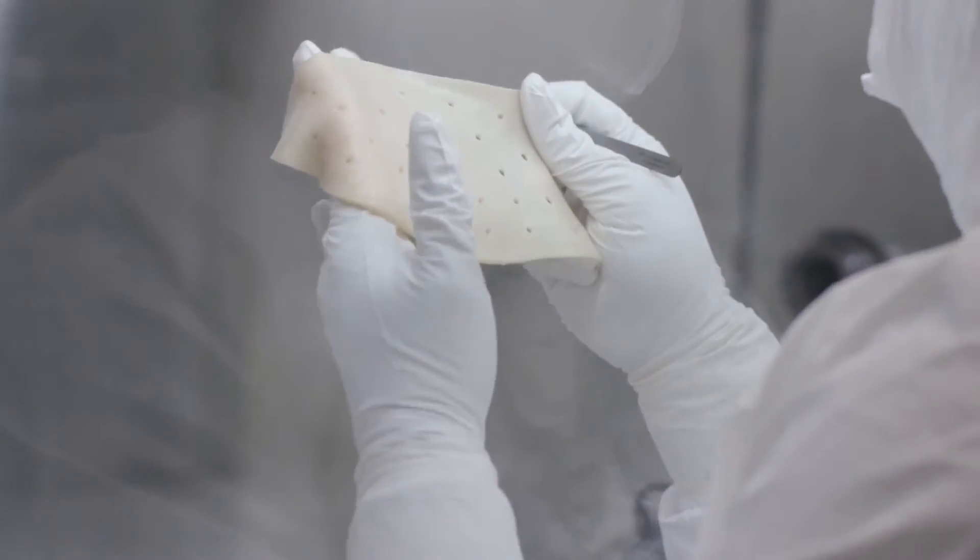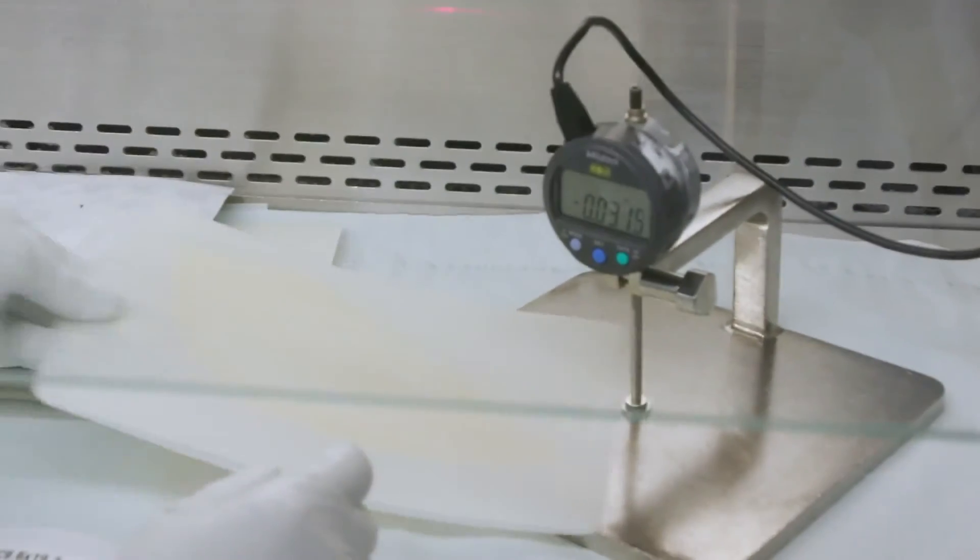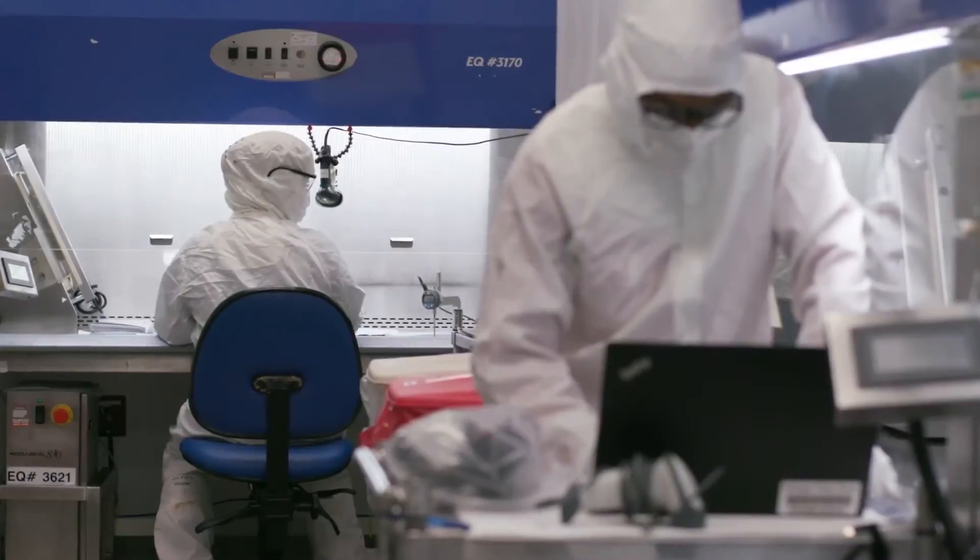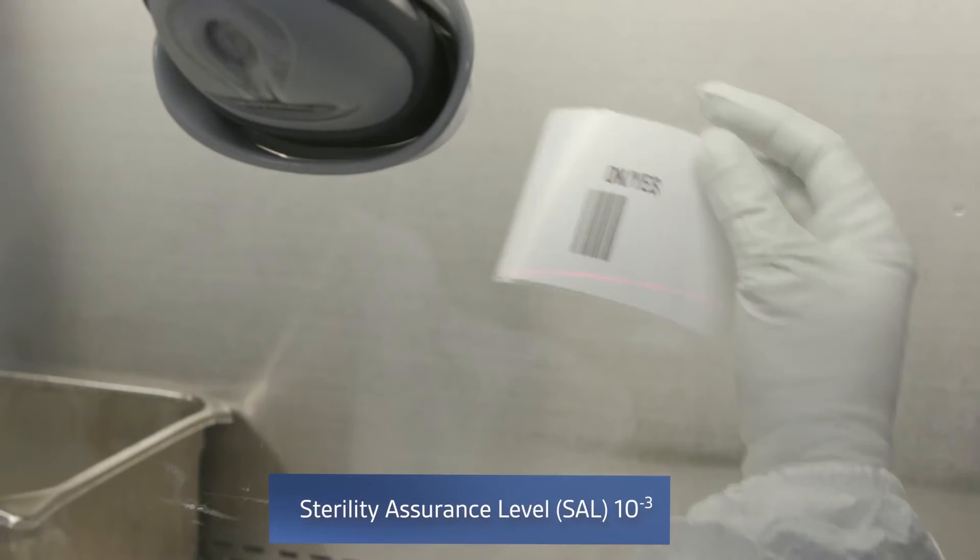Once it passes visual inspection, the piece is carefully packed by hand into its internal pouch and measured to ensure proper uniform thickness. Labeling is then applied and the packaging is sent to be sterilized.